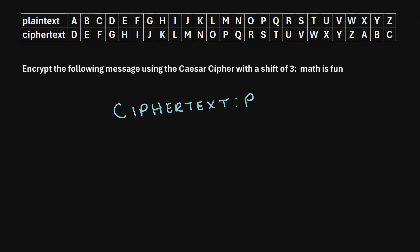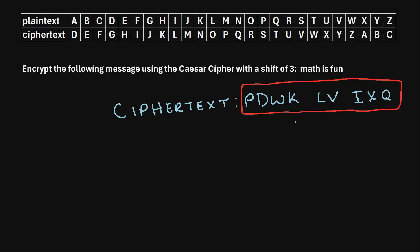Next we have A. The plain text A maps to the cipher text D, so we'll write D. Then we move on to T — the plain text T maps to the cipher text W. We'll just continue in this manner until we have encrypted the entire plain text. And here is what we end up getting for our cipher text. That's how we encrypt 'Math is fun' using a Caesar cipher with a shift of three.